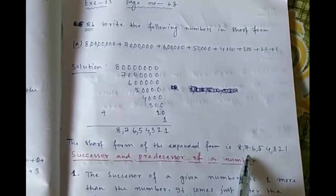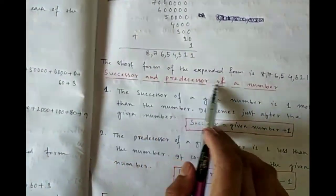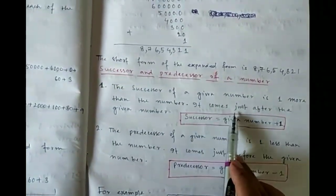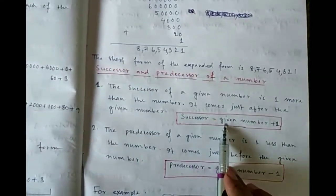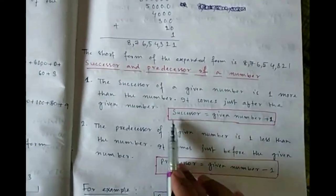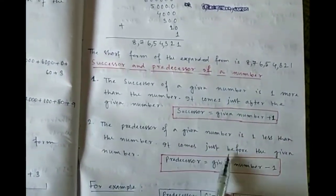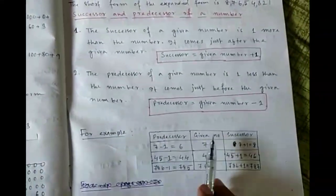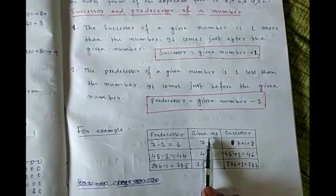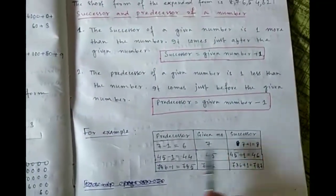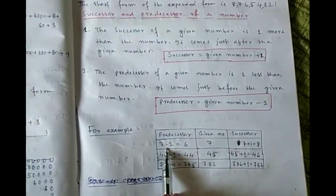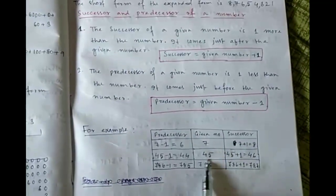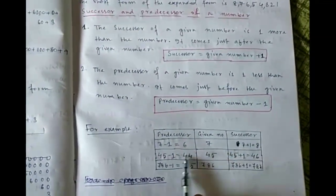Now we will learn successor and predecessor of a number. The successor of a given number is one more than the number; it comes just after the given number. Successor = given number + 1. The predecessor of a given number is one less than the number; it comes just before the given number. Predecessor = given number − 1. For example, the successor of 7 is 8 and the predecessor is 6. The successor of 45 is 46 and the predecessor of 45 is 44.